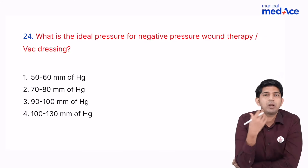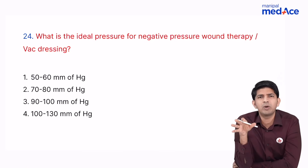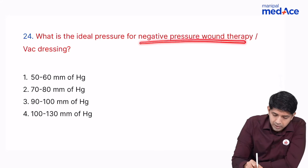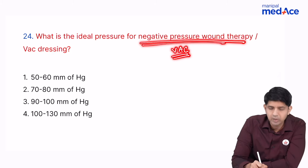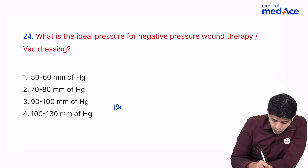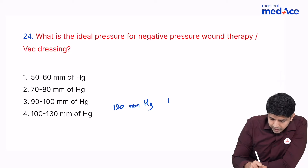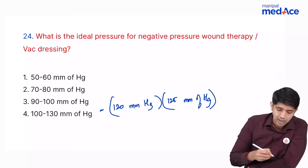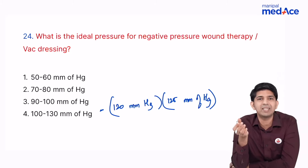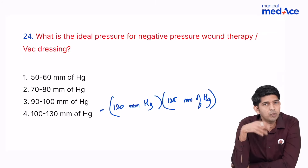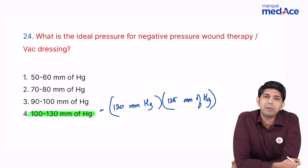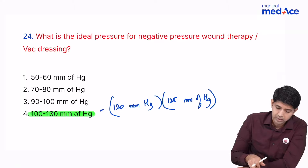A question asked about the ideal pressure for negative pressure wound therapy (VAC dressing). The answer is 120 to 125 millimeters of mercury — this is negative pressure. If the options did not specify negative, assume it. The answer falls in the range of 100 to 130 millimeters of mercury.